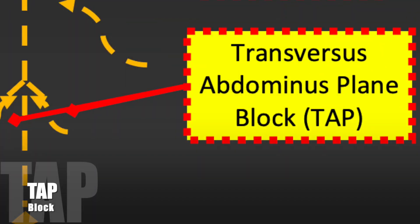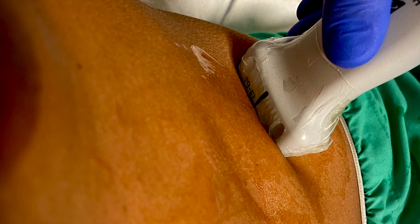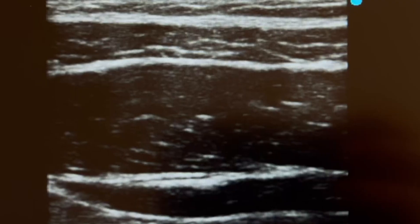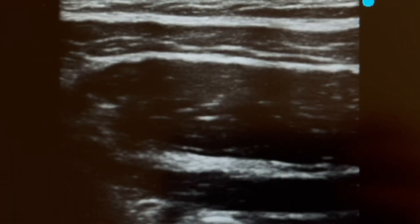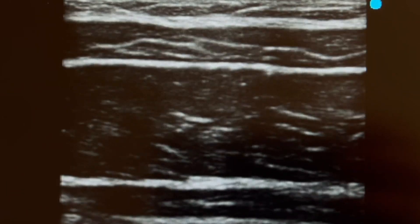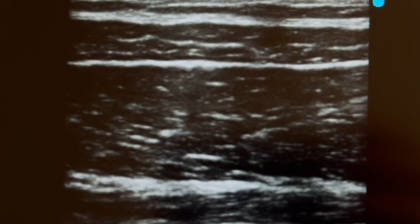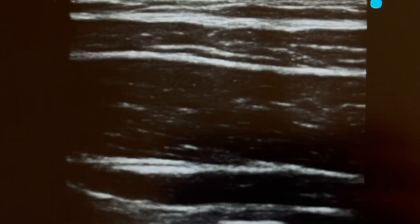The transversus abdominis plane, or TAP block, is common in surgeries like hysterectomy, exploratory laparotomies, and bowel resections, among others. It is a plane block because we inject medications along where the muscles meet and where the nerves are. Usually, it involves an injection on both sides of your abdomen, and it is safely performed while you are asleep.